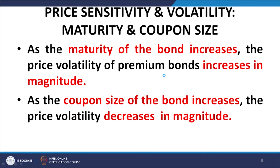Regarding price sensitivity and volatility versus coupon size: irrespective of whether a bond is premium, par, or discount, an increase in coupon rate will manifest as a decrease in both the sensitivity and the volatility of the bond.